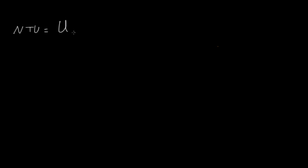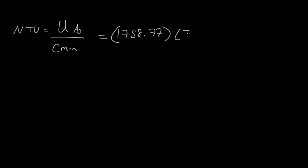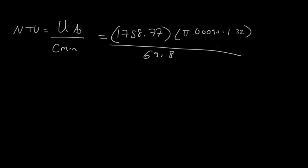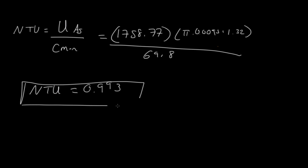The last thing we need to find is the number of thermal units (NTU), which equals U × A / C_min. NTU = 1758.77 × (π × 0.0095 × 1.32) / 69.8 = 0.993. That is our number of thermal units — the third answer.